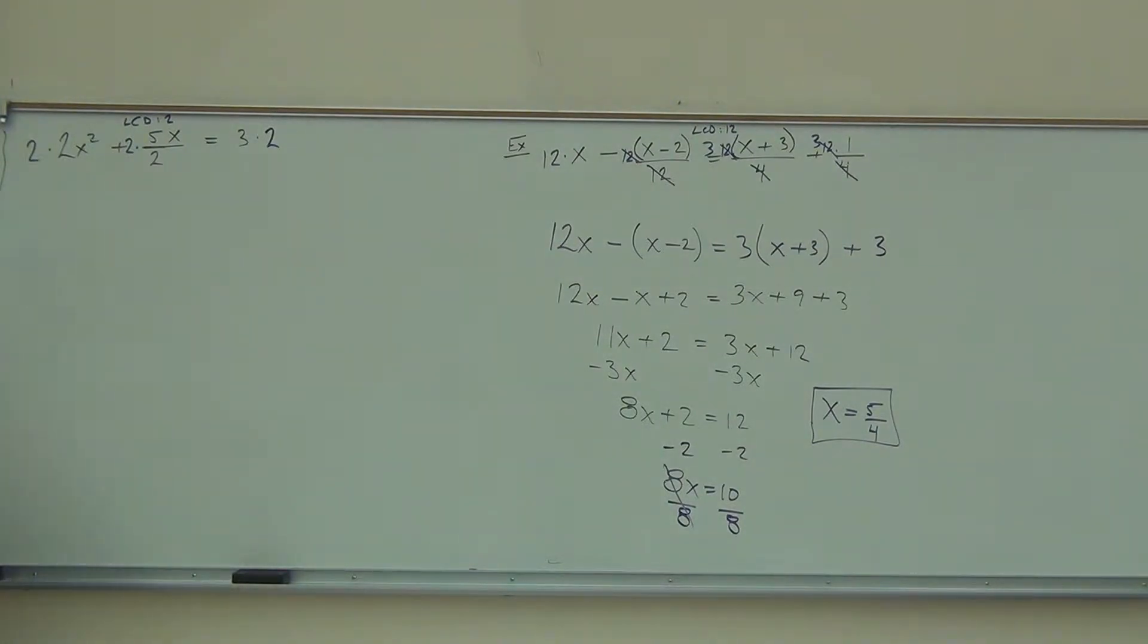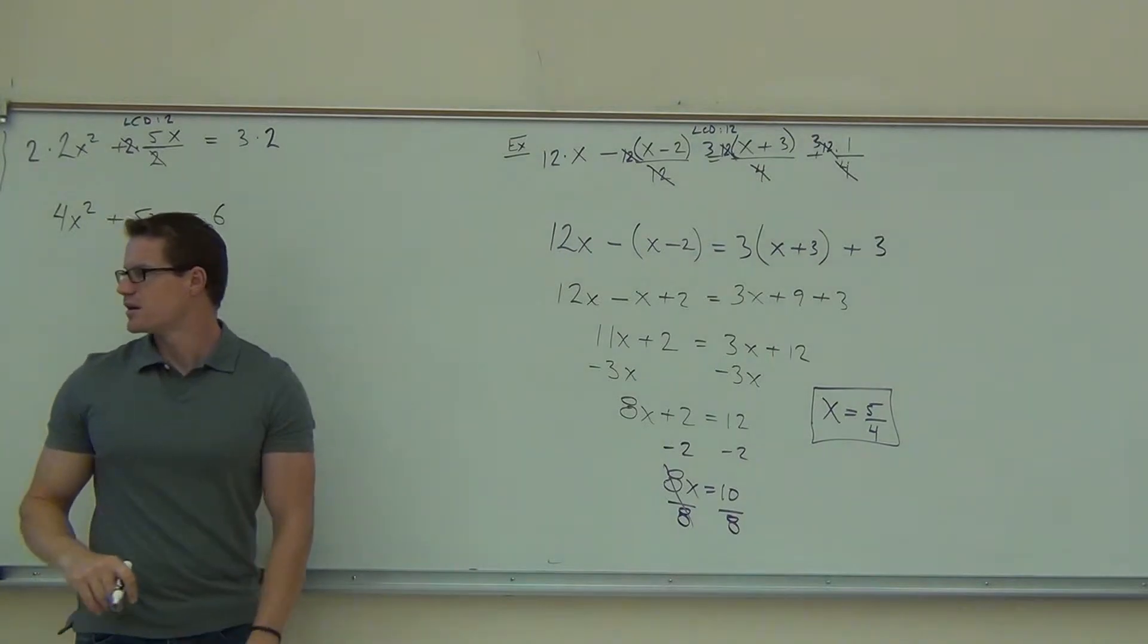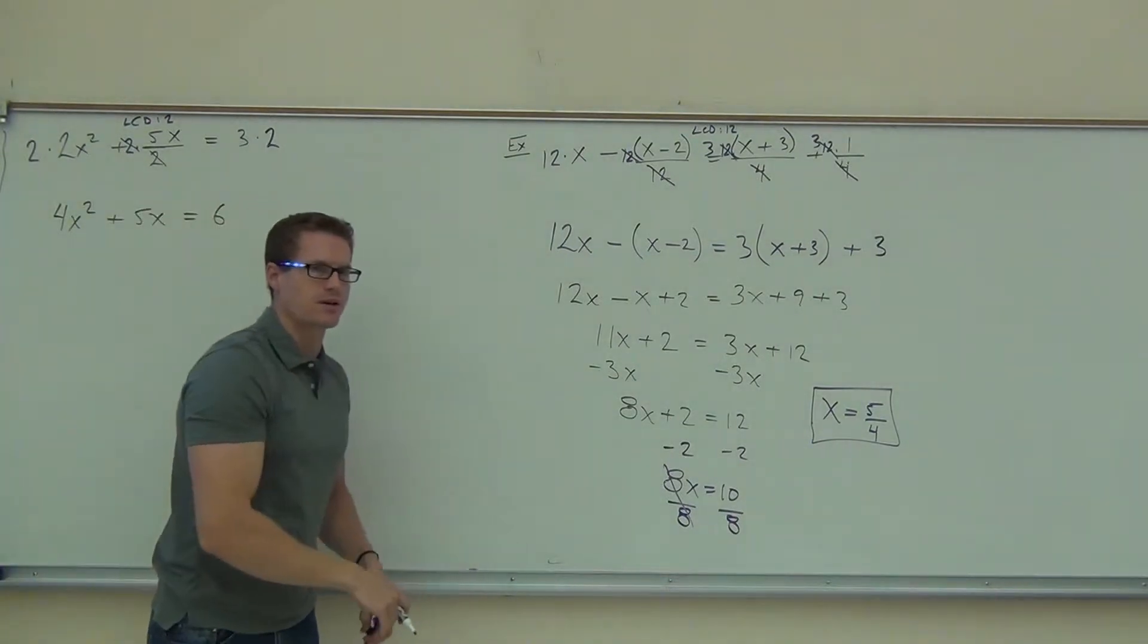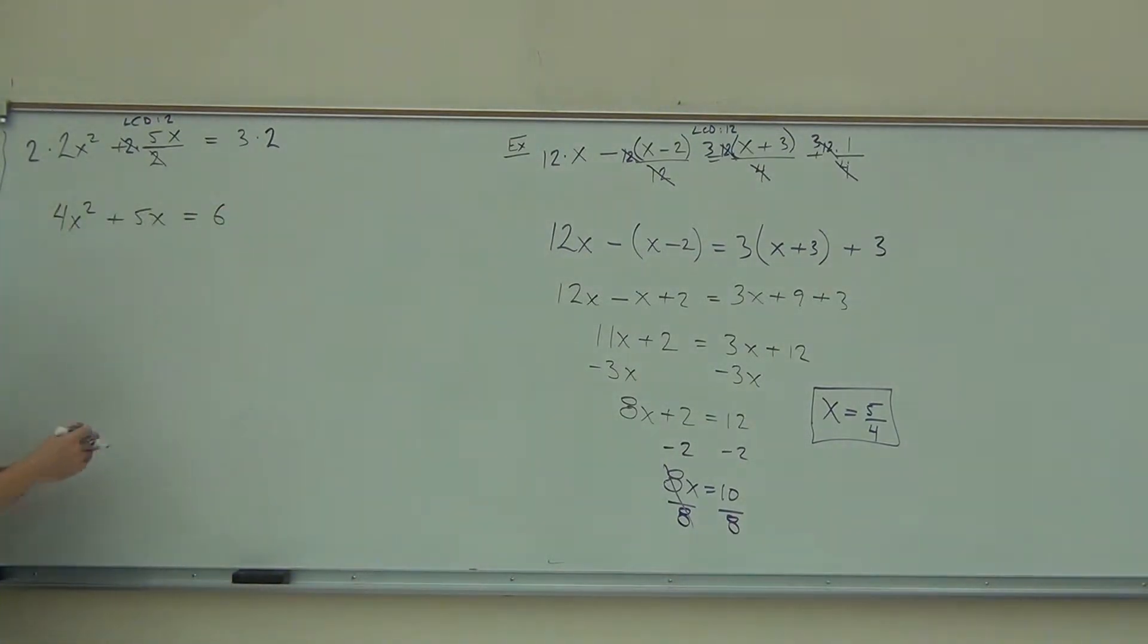So we multiply by 2 real quick. What are we going to end with? Good. Those 2's are gone. We have 5x equals - this one's kind of nice. No distribution that we have to do. That's kind of nice, none of this nasty stuff that we did over here.